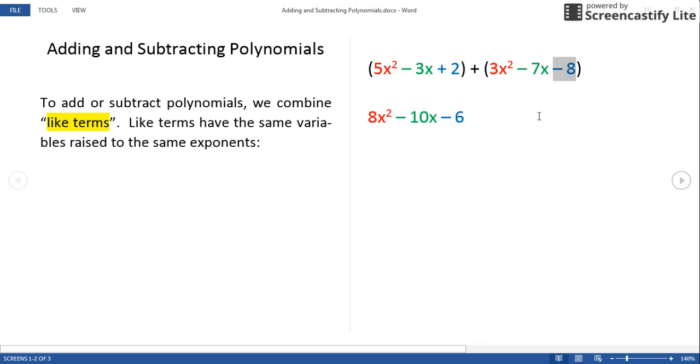We keep the sign of the larger number. The magnitude of the -8 is larger than the 2, so we take the sign of the -8. 8 minus 2 gives me 6, so our result is -6. And here is the sum of these trinomials.